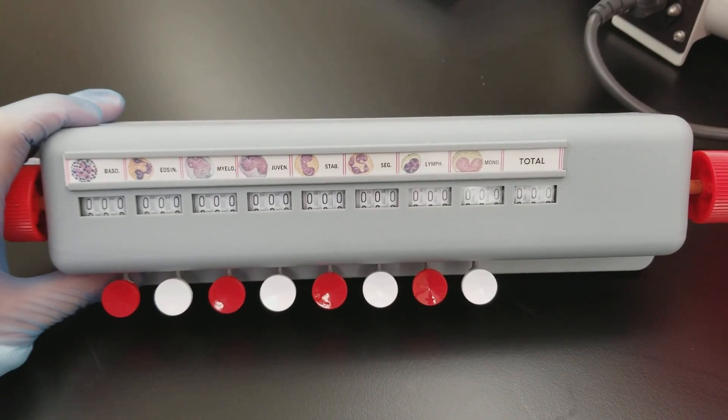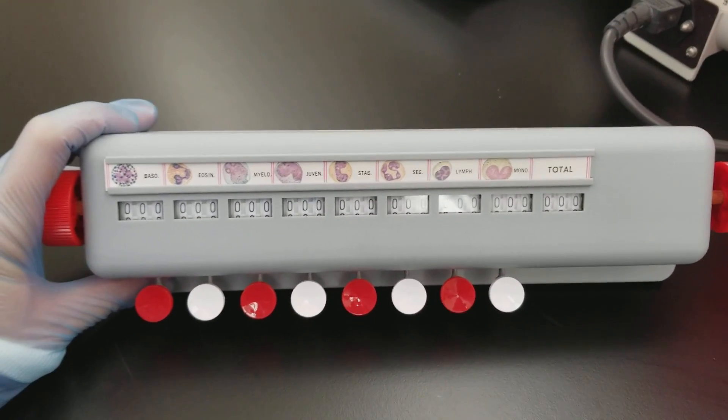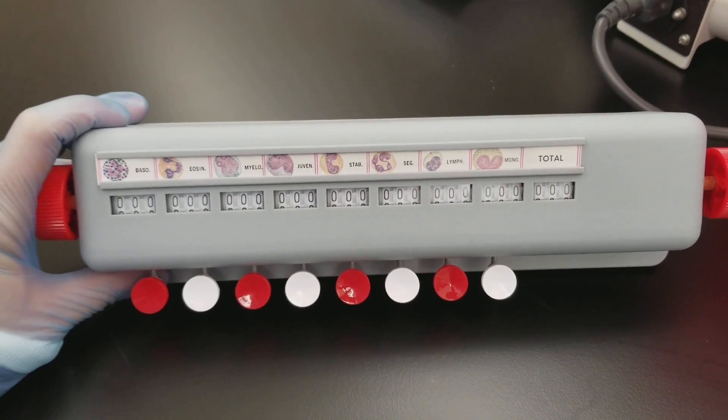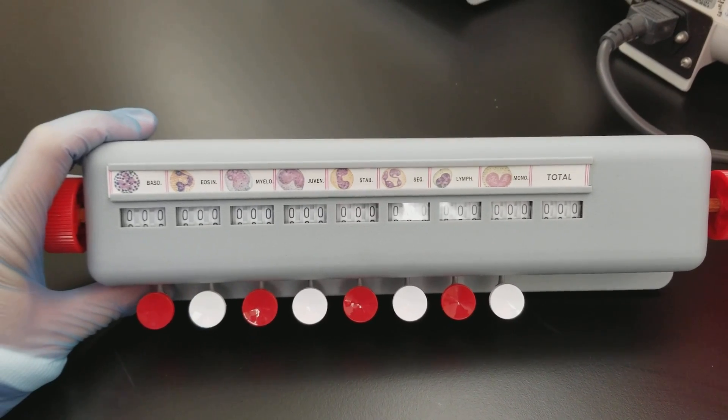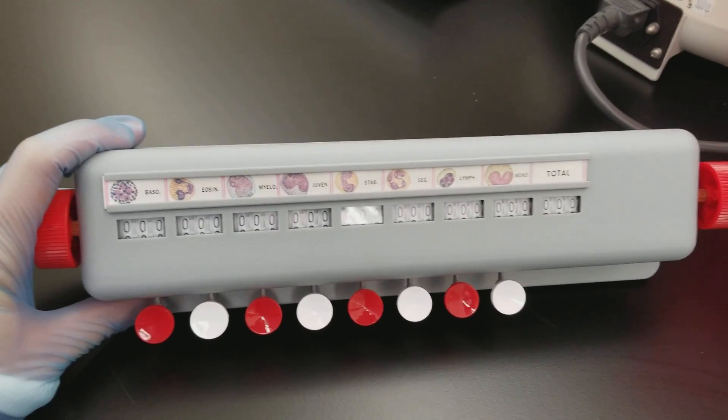You also do a blood smear review when you're doing a WBC differential. You're looking for any cell clumps on the outsides of the smear.